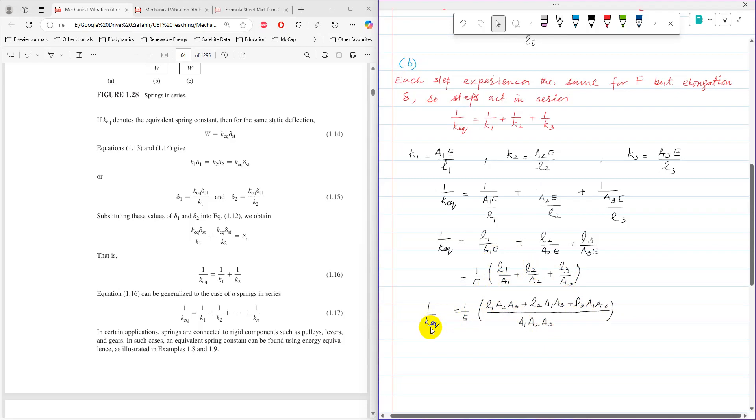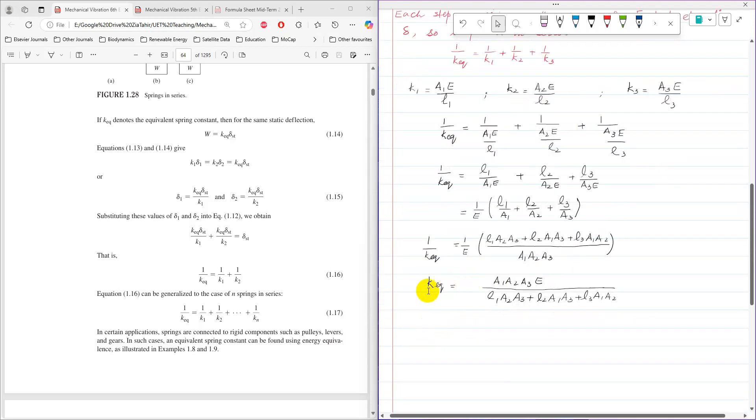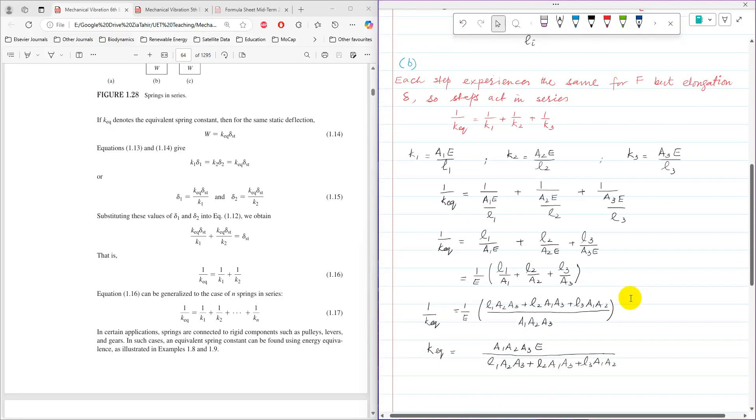And finally, to get K equivalent, just take the reciprocal of both sides. So now by taking reciprocal, K equivalent becomes A1 times A2 times A3 times E divided by L1 times A2 times A3 plus L2 times A1 times A3 plus L3 times A1 times A2. So that is the equivalent spring stiffness of the step bar.